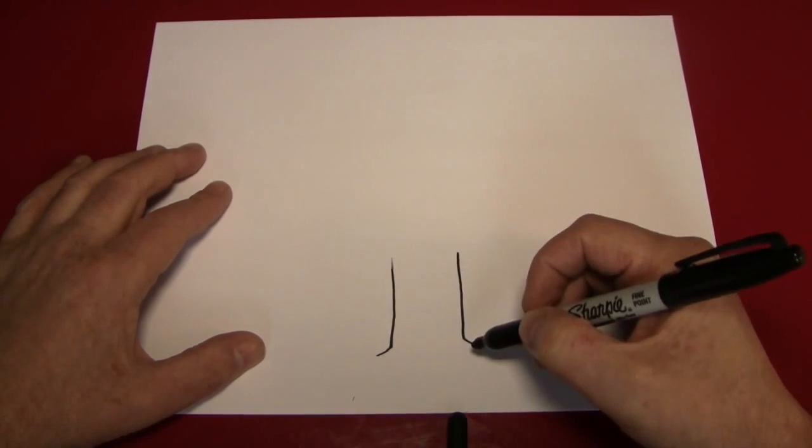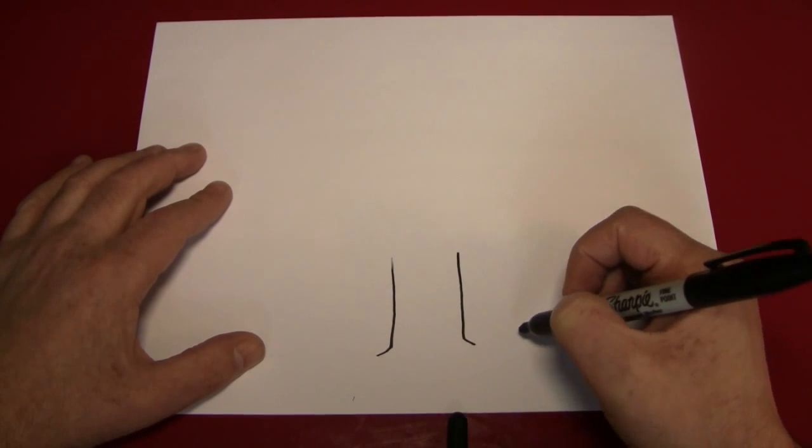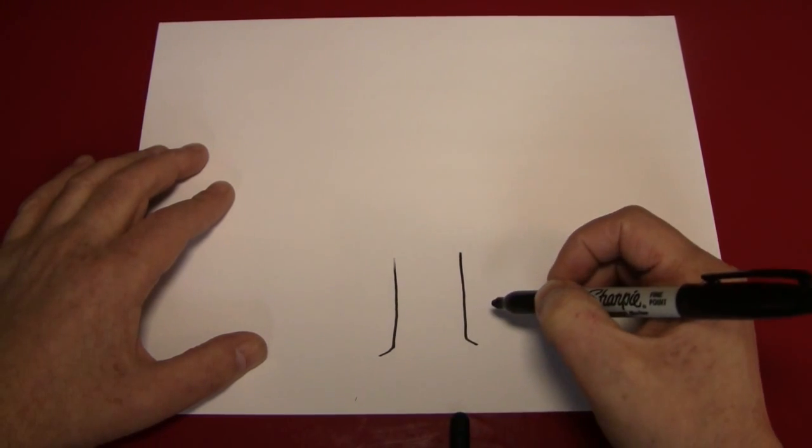This is the trunk of the tree, and this is the part of the tree that has roots, the part that goes into the ground.